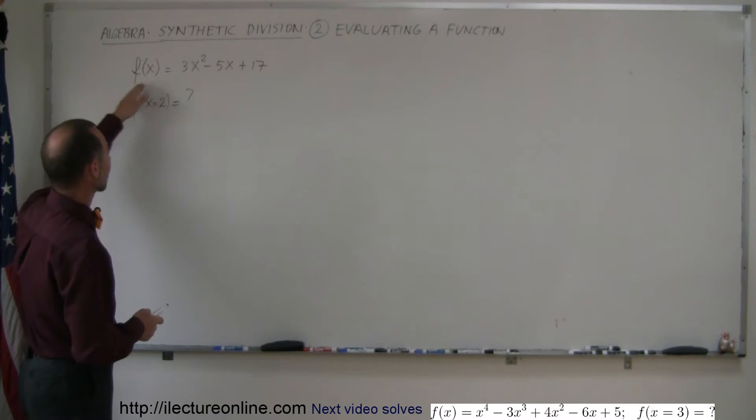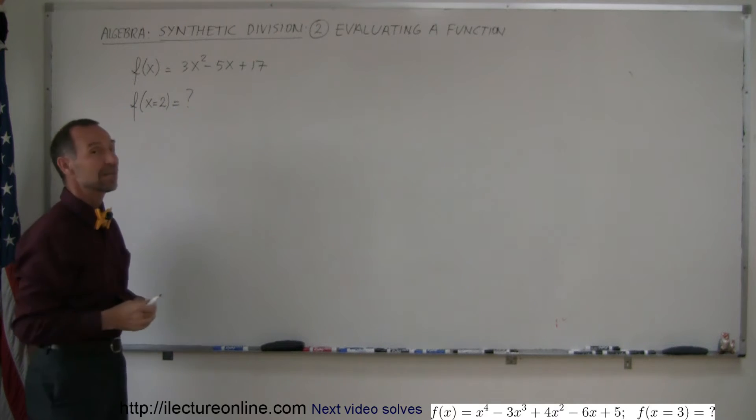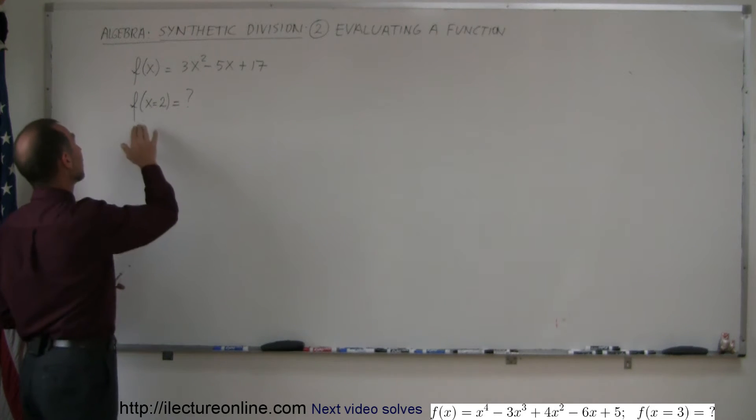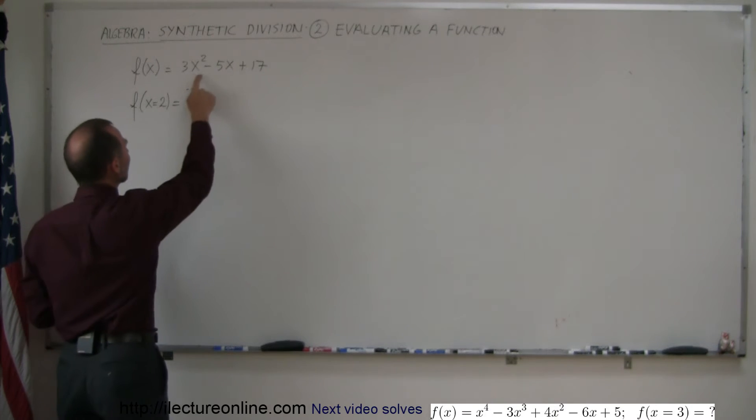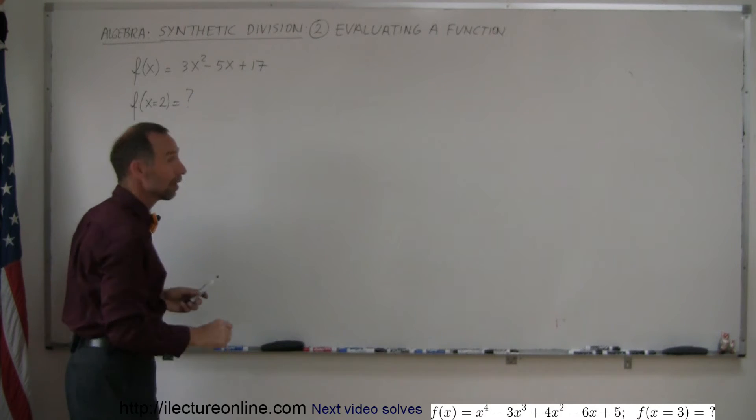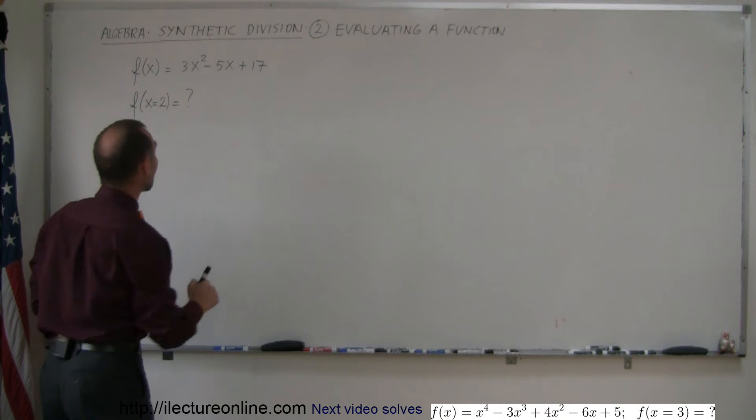Now, if we have a function f(x) = 3x² - 5x + 17 and someone asks you what is the function evaluated when x equals 2, you already know what you're going to do. You're going to replace every x by 2 and work all this out. But it turns out you can also do it with synthetic division. So this is how you do that.